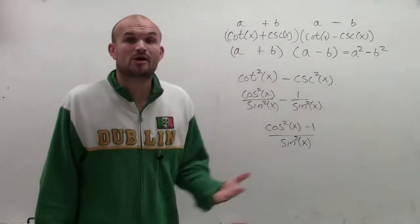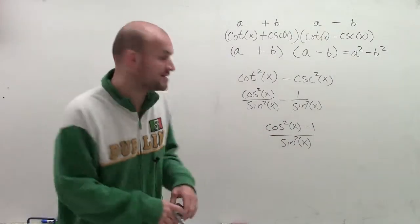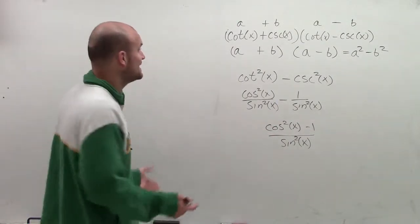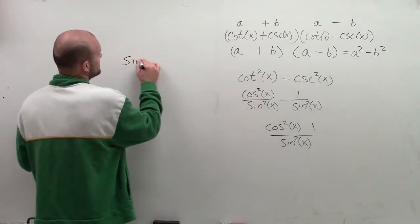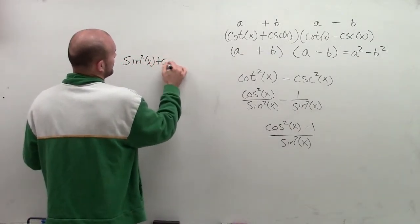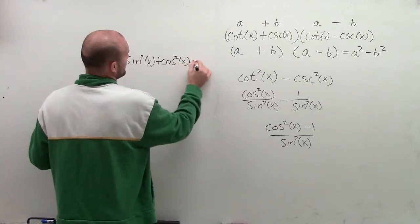Then I look at cosine squared and automatically think, oh, is that going to be part of my trigonometric? Or can I use a Pythagorean identity to solve that? So we look at our Pythagorean identities, which says sine squared of x plus cosine squared of x equals 1.